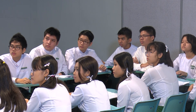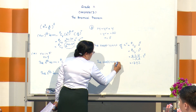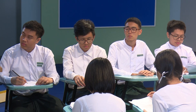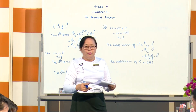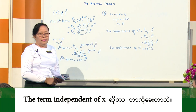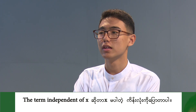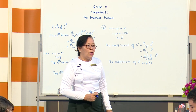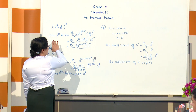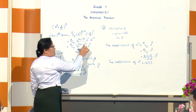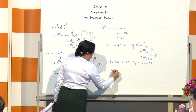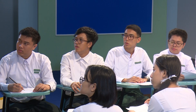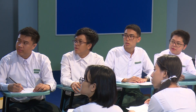To find the term independent of x, we need the coefficient of x to the power 0. Set 24 minus 4r equals 0. Then minus 4r equals minus 24, so r equals 6.